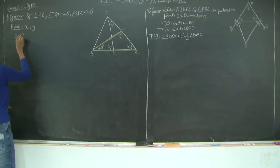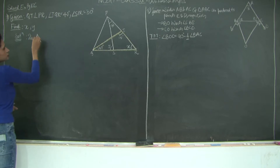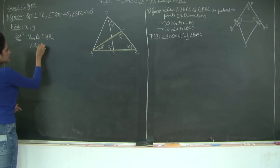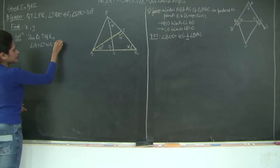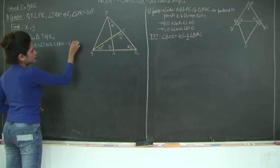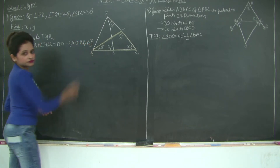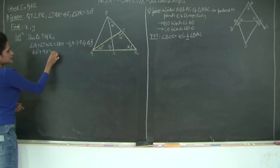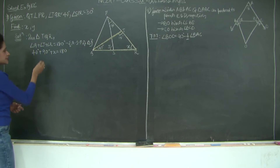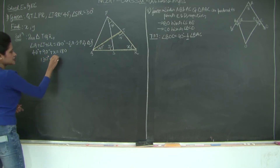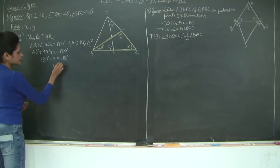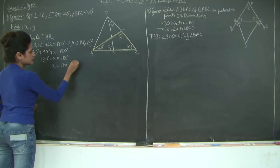Solution: In triangle TQR, angle Q + angle T + angle R = 180 degrees (angle sum property of triangle). Substituting: 40 degrees + 90 degrees + X = 180 degrees. Therefore, 130 degrees + X = 180 degrees, so X = 50 degrees.